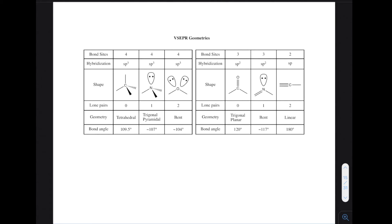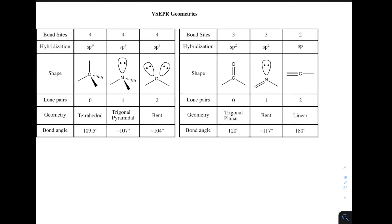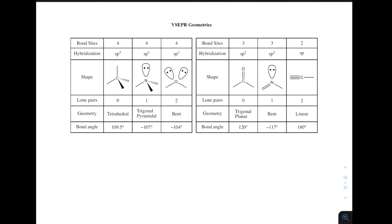Regarding other VSEPR geometries, there are a lot of them. In general chemistry 1, you look at many different ones — including those involving d orbitals, like octahedral geometry. Here, we are not too concerned with that because we're mostly looking at the second row of the periodic table, which only has s and p orbitals. So we're only really looking at sp hybridized orbitals: sp3, sp2, and sp.